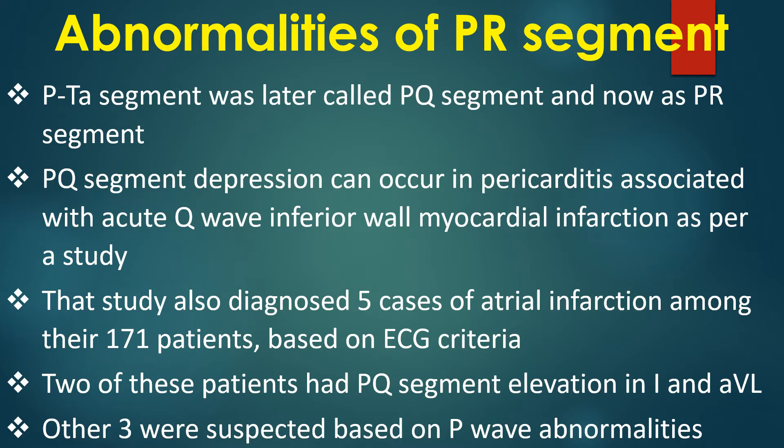PQ segment depression can occur in pericarditis associated with acute Q wave inferior wall myocardial infarction, as per a study. That study also diagnosed 5 cases of atrial infarction among 171 patients based on ECG criteria. Two of these patients had PQ segment elevation in V1 and AVL, while the other three were suspected based on P wave abnormalities.